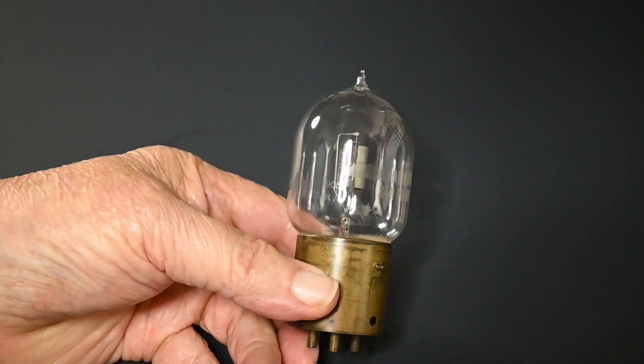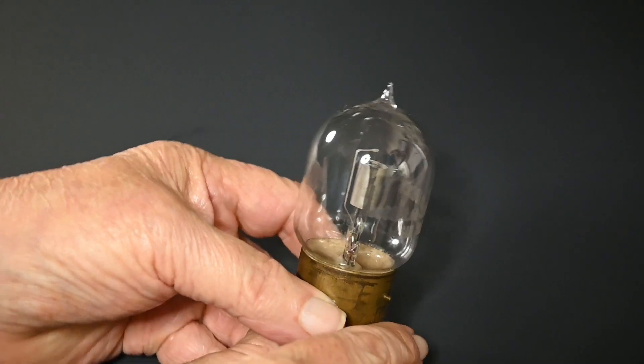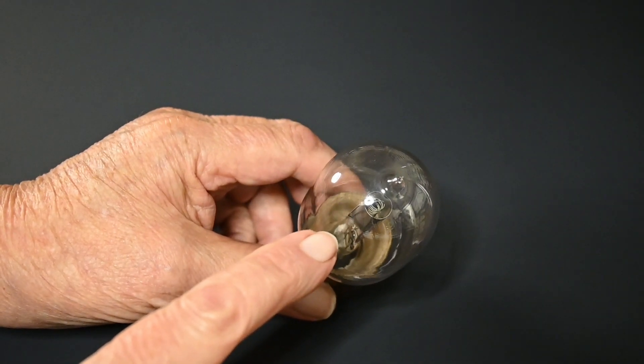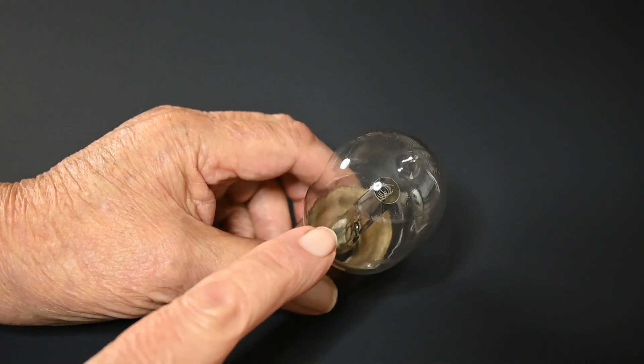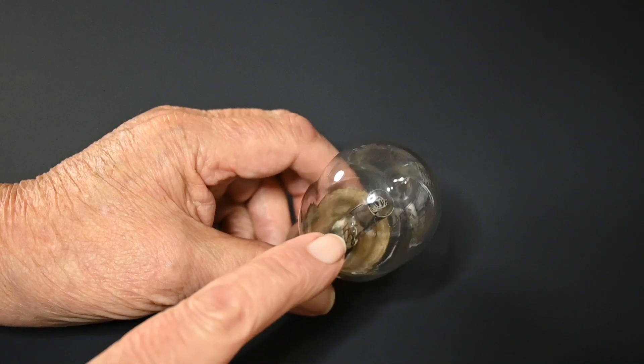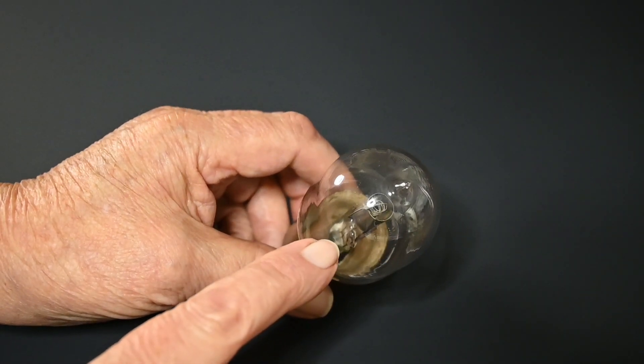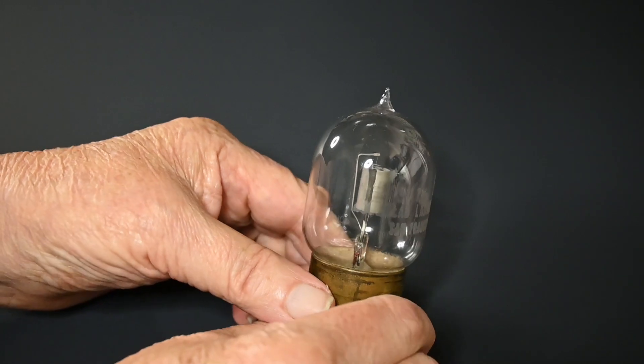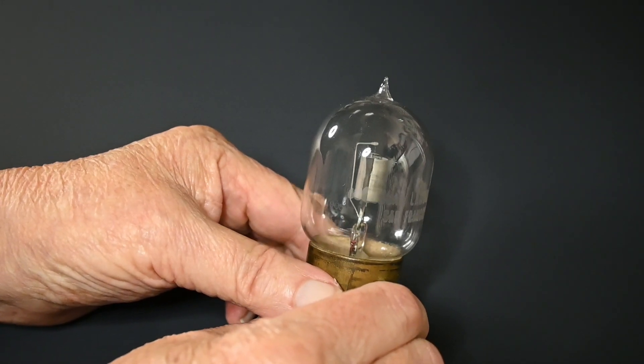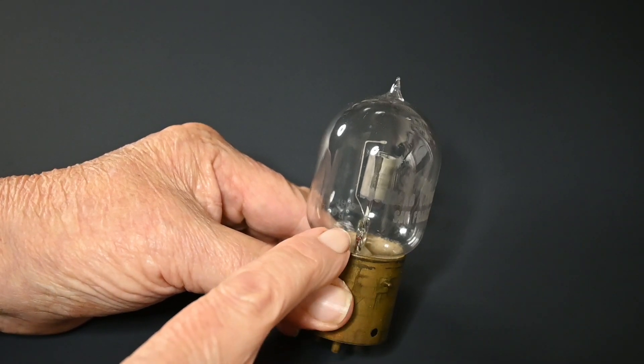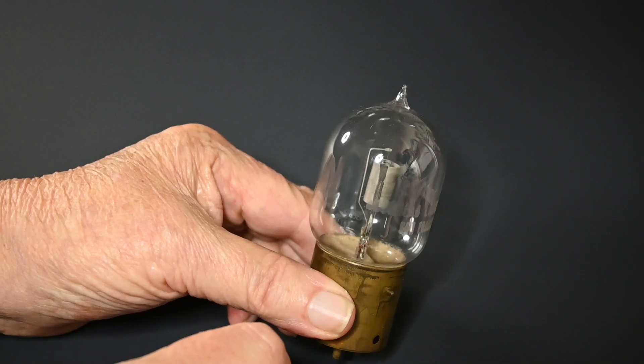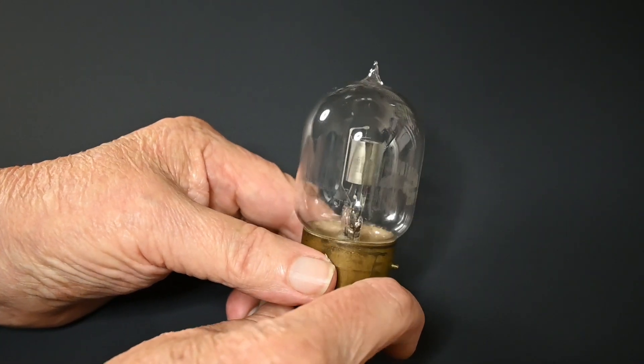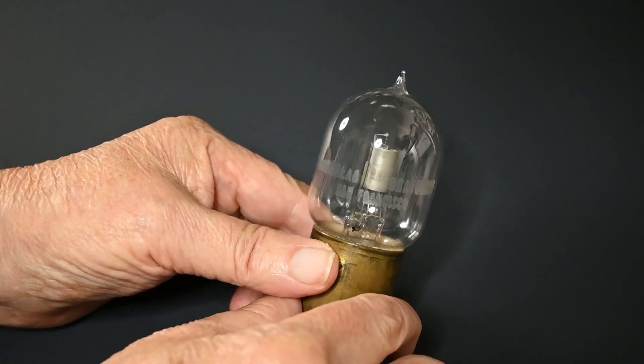Here's an early triode tube. And if we look down from the top here, we can see inside the plate. Of course, the barrel is outside. And the thing that looks like a spring is the grid. The filament is that wire at the top. It's holding up the filament, and then it's connected to another connection at the bottom. So the filament in this tube is vertical.